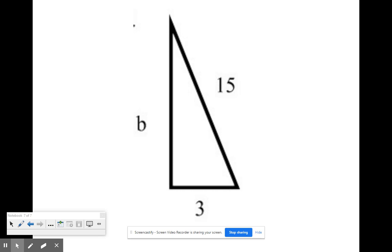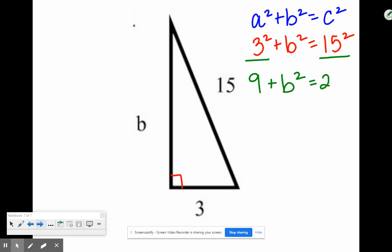Pause the video and take time to draw this out. Notice that I am still missing a leg in this case. They gave us the hypotenuse of 15. I have a right triangle, so I can use the Pythagorean theorem. So I have 3 squared plus B squared equals 15 squared. So just like the last example, I'm going to follow along those same steps. 3 squared, 15 squared, 9 plus B squared equals 225.